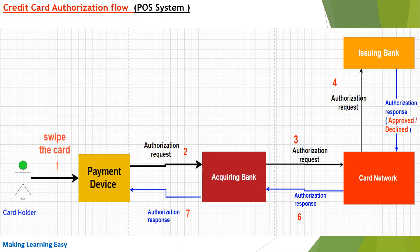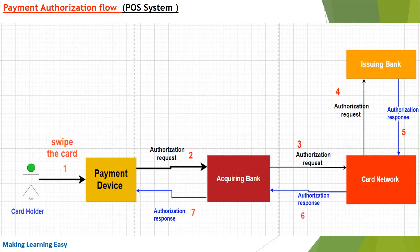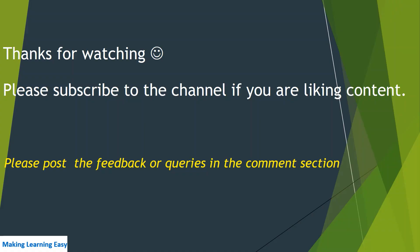Here the acquiring bank is working as both the payment processor and the merchant bank. So how many parties are involved in this authorization flow? You can see: issuing bank, card network, acquiring bank, and merchant — four parties. This is how credit card authorization works in a point of sale system. That's all for this session, thanks for watching, see you in the next video.